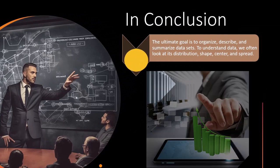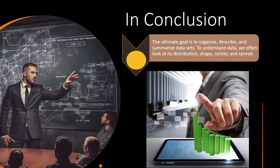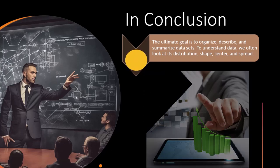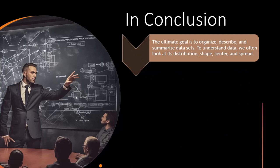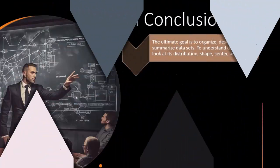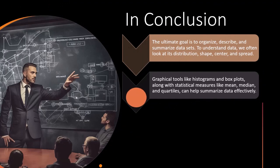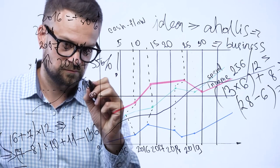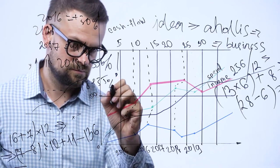So in conclusion, the ultimate goal is to organize, describe, and summarize data sets. To understand data, we often look at its distribution, shape, center, and spread. Those are the things you want to keep in mind. We're trying to understand the data. What are we trying to do with it in statistics? We want to find the distribution, shape, center, and spread. So graphical tools like histograms and box plots, typically we're going to be leaning towards the histogram. But box plots, we'll take a look at them as well, along with statistical measures like mean, median, quartiles, can help summarize data effectively.